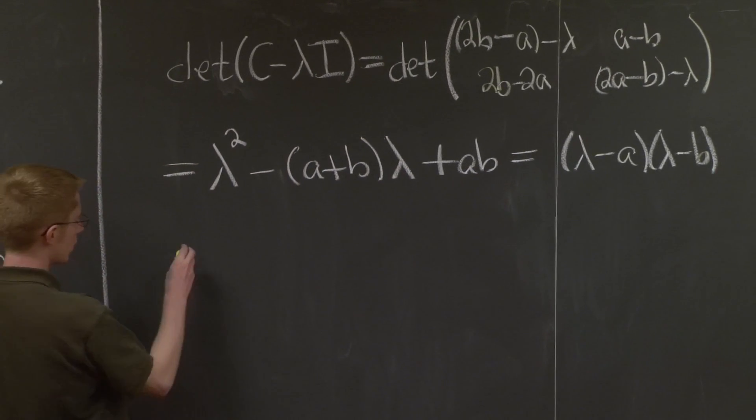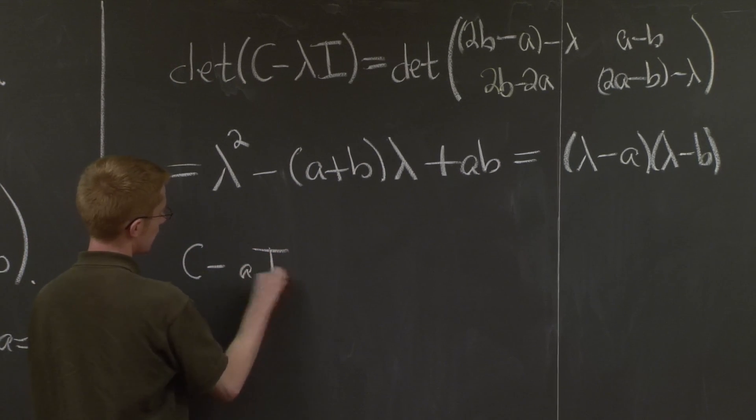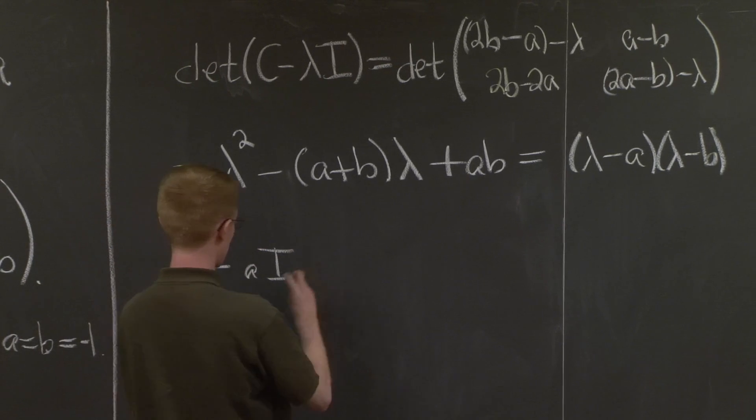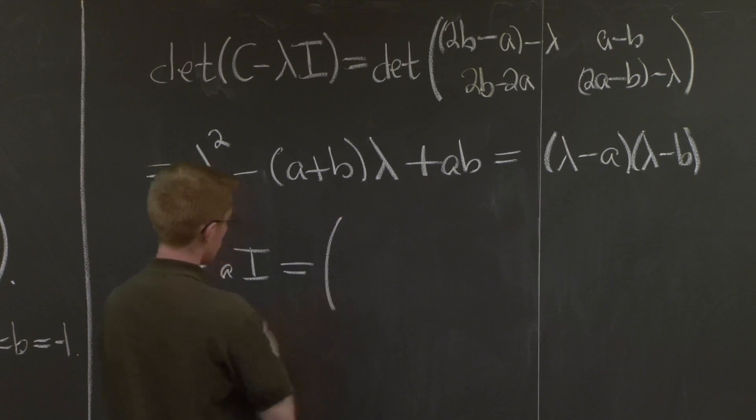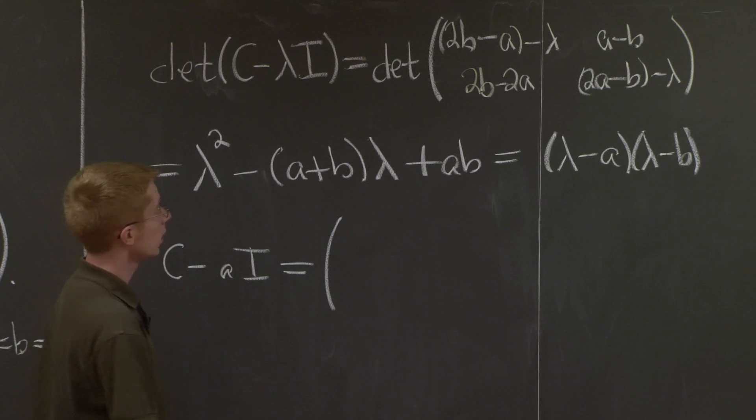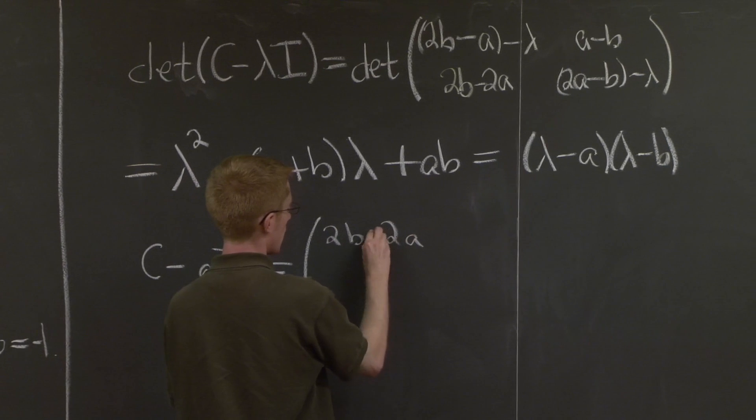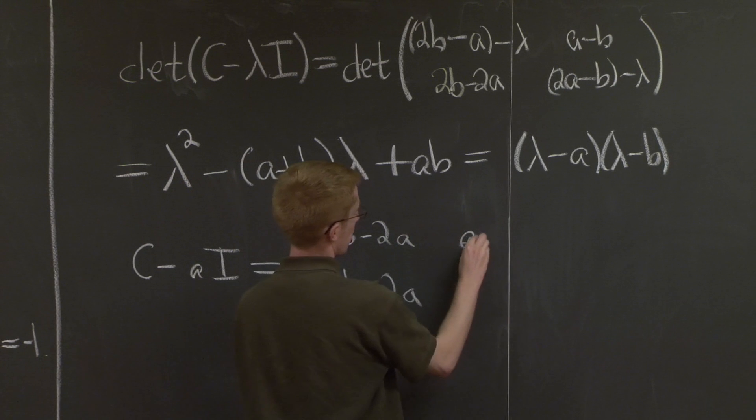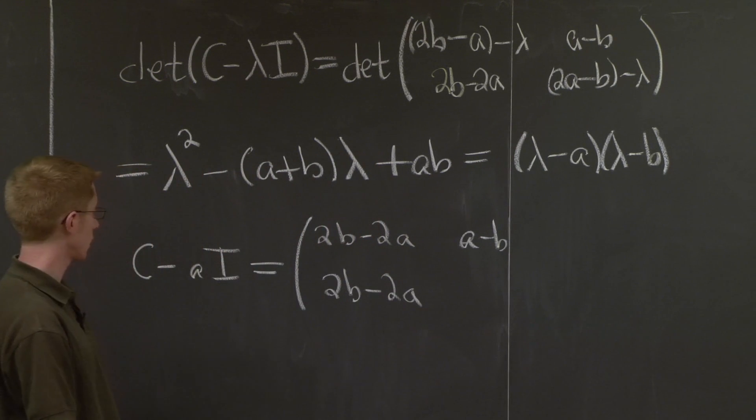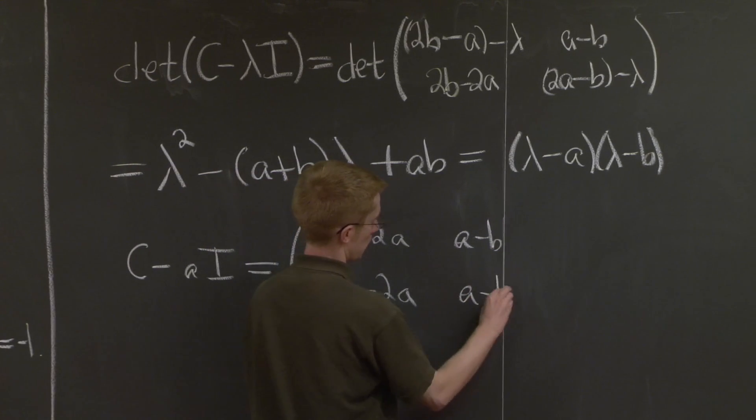Well, what we need to do is we need to look at C minus A times the identity, and we need to find the null space of this matrix. So what do we get here? So here we get 2B minus 2A. And then our next entry here, we get 2A minus B minus A. So this is A minus B.